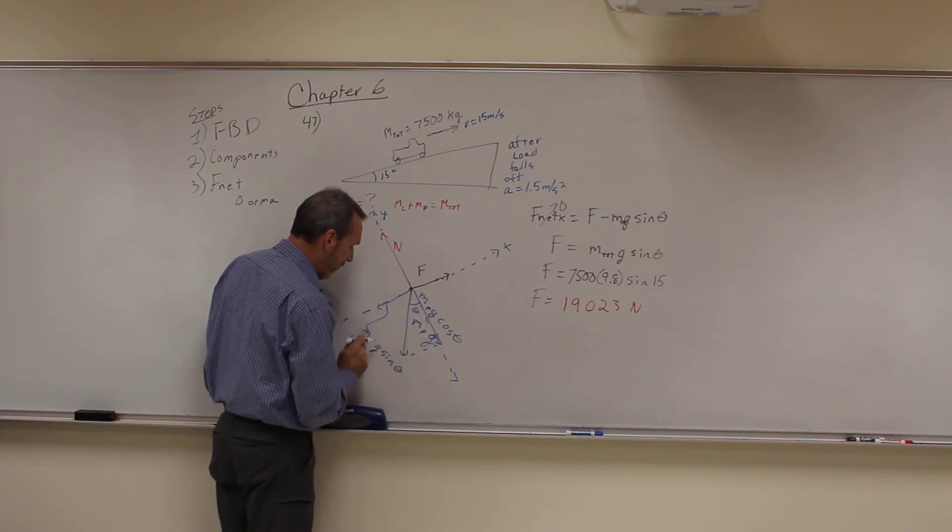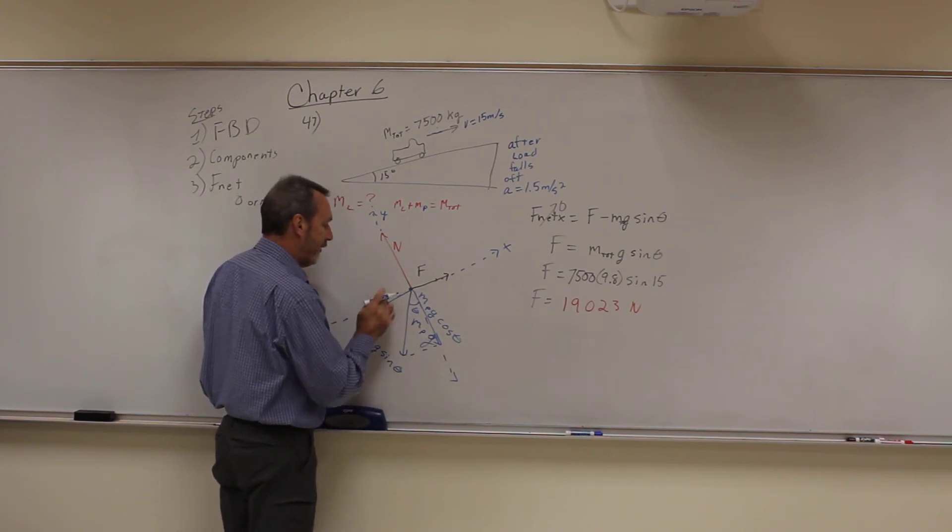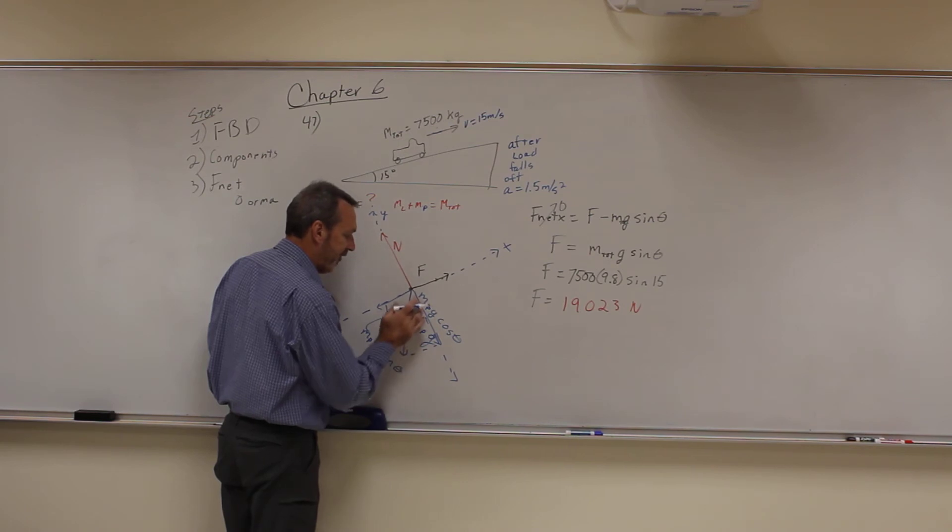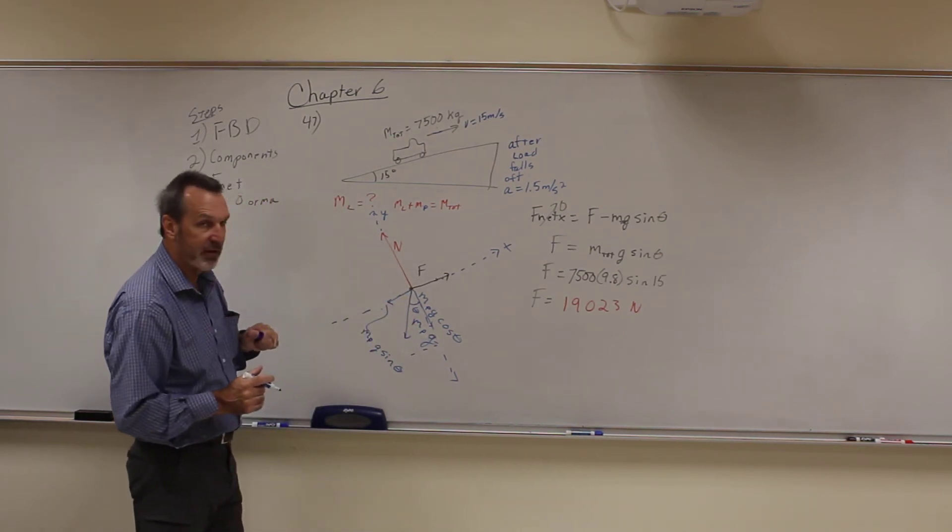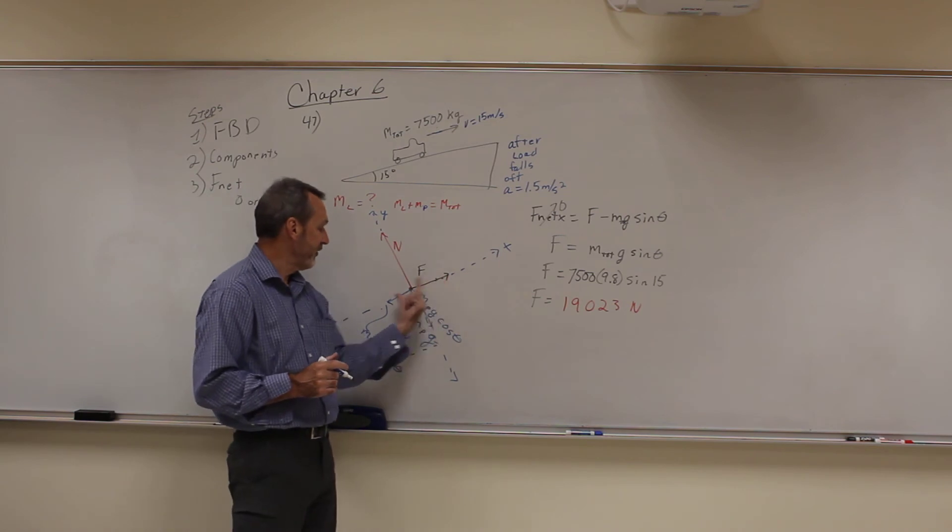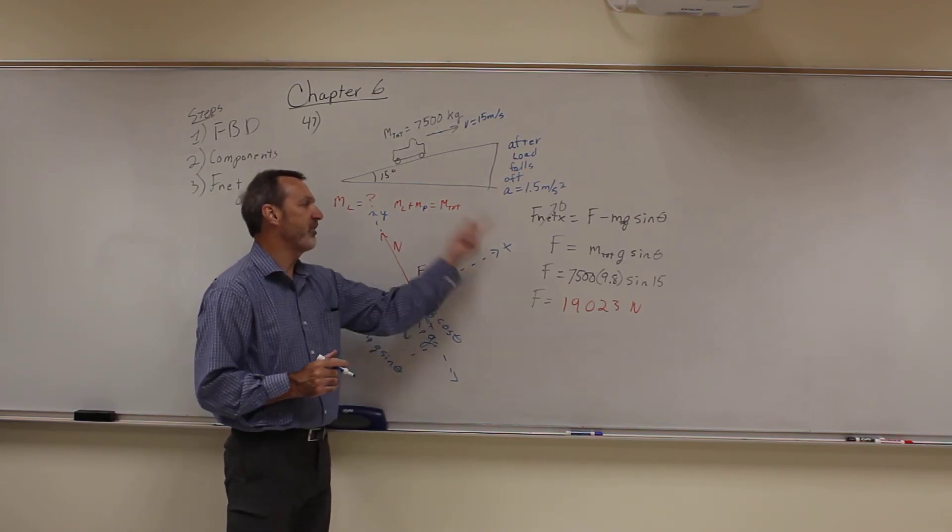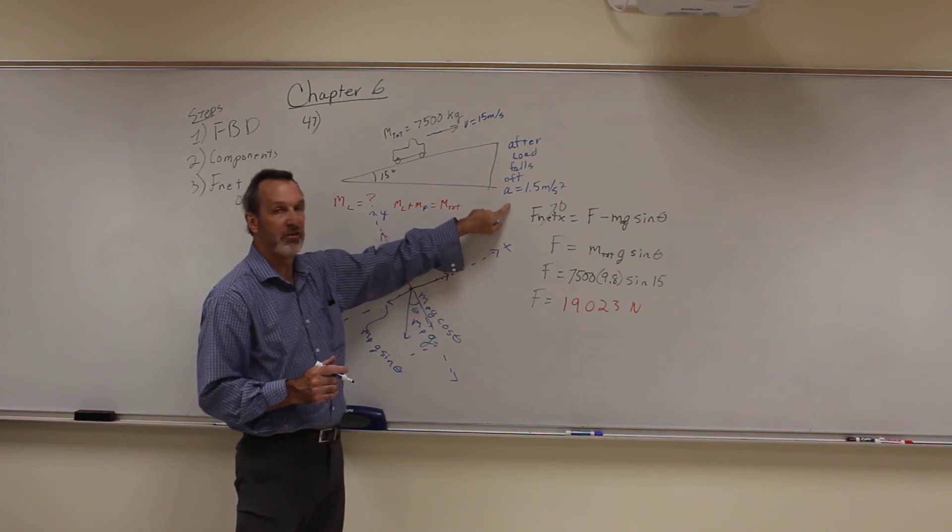So this just changes to the mass of the pickup truck. And the difference is that since this is smaller, these reduce. So the length of our arrows reduces, which means that this force is greater than this force. Which means it's accelerating up the hill, and we know what its acceleration is.